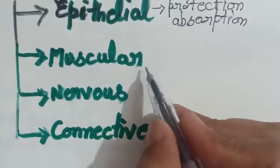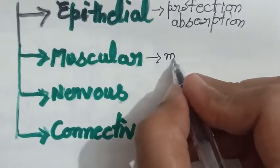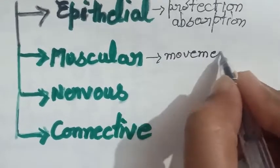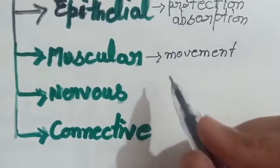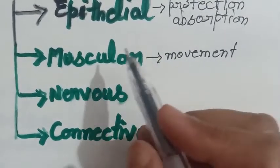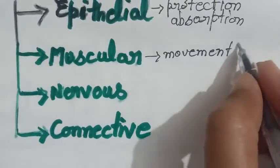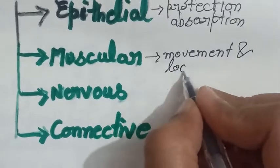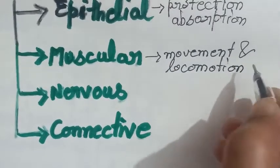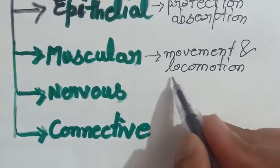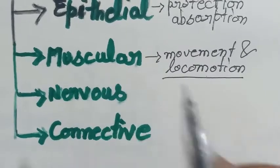Then next one is muscular tissues, they help in movement of the body, means whatever we move, means like we are moving our leg, our hand, our neck. These all functions are the muscular tissues function. Movement and locomotion. Locomotion means when we are moving from one place to another, such kind of movement is known as locomotion. So this is also brought about by our muscular tissue.